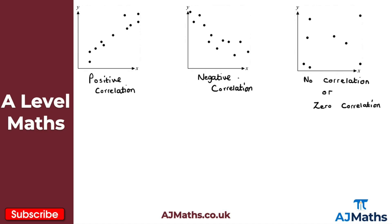With negative correlation, as one increases the other decreases. Generally speaking, we'll start in the top left and finish in the bottom right.